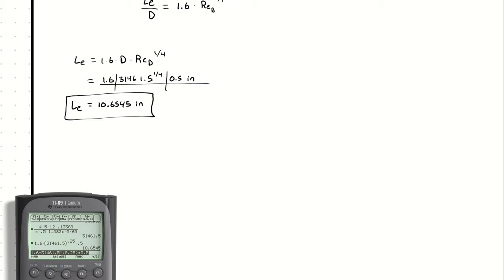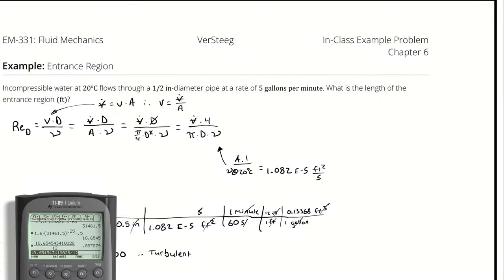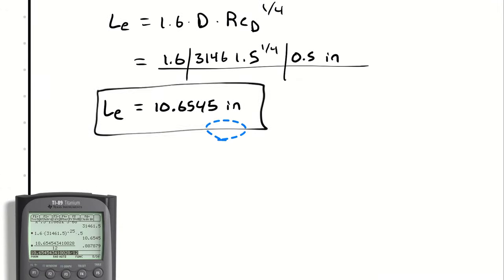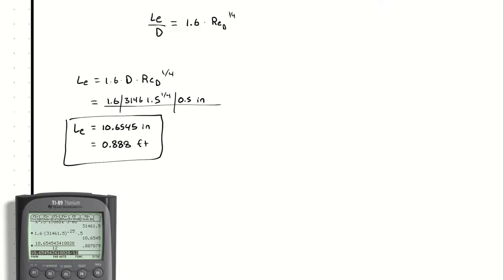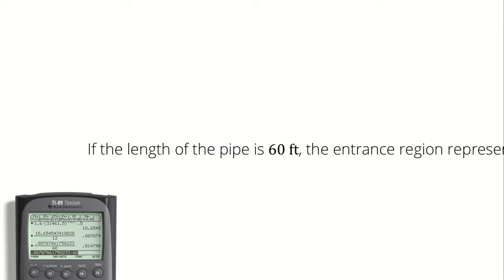So 10.6545 divided by 12 is 0.887879 feet. And in fact, I think I asked for the entrance length in feet, so I can correct that. And then I'm taking that number divided by 60 to yield a percentage. And I see that only 1.5% of my pipe is entrance region.